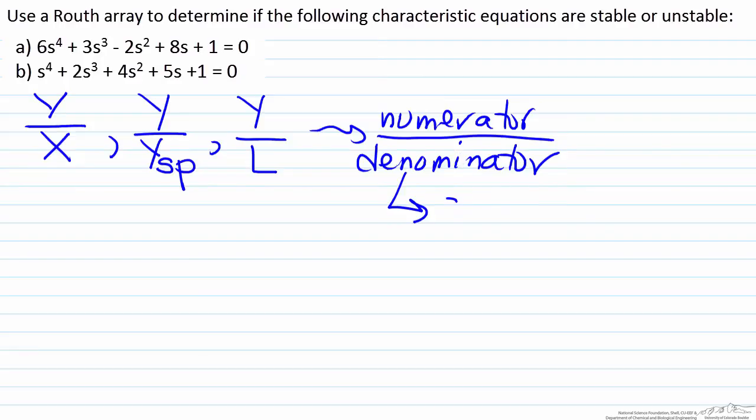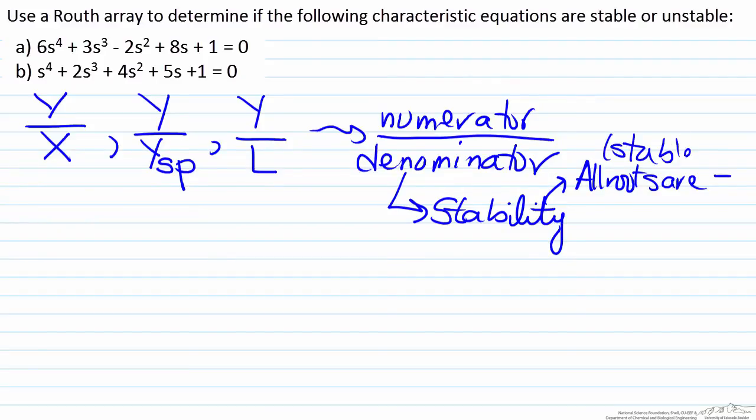The issue of stability is handled solely in the denominator. Most importantly for stability, if all of the roots are negative that means the process is stable.